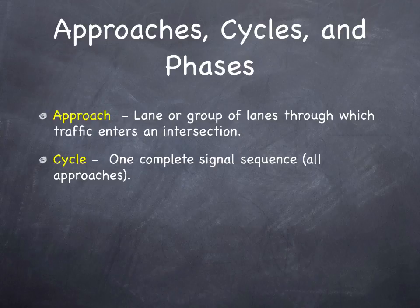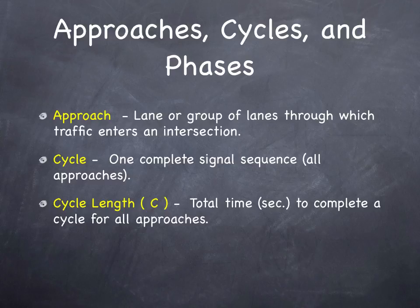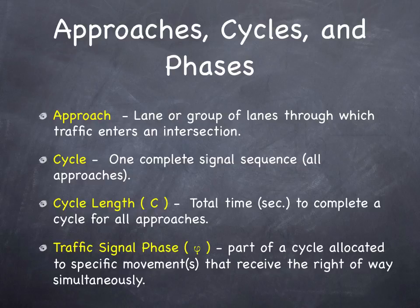A cycle is the complete amount of time it takes to go from a red light to a red light — we think of it as a clock. The cycle length is the amount of time it takes to complete a cycle, measured in seconds. A phase is the part of the cycle allocated to a particular movement, denoted by the Greek symbol phi.